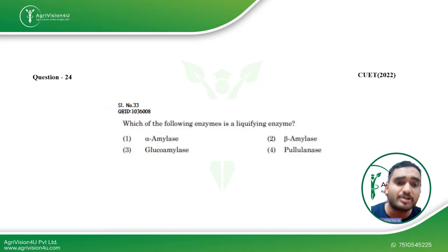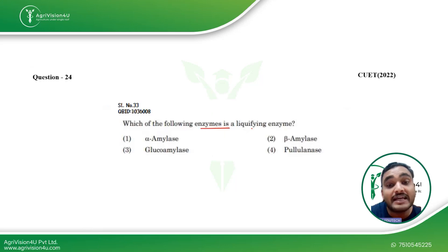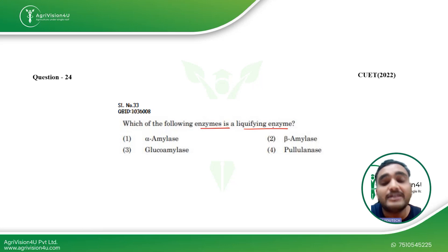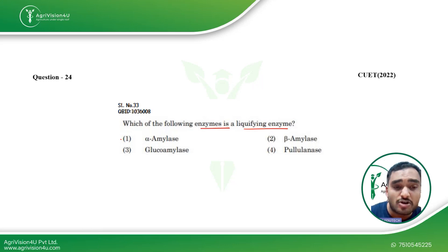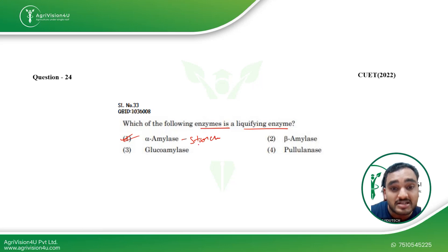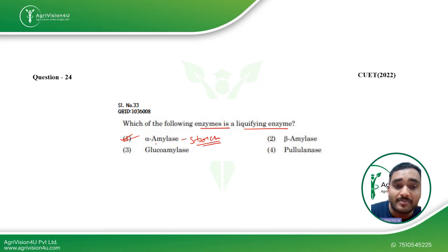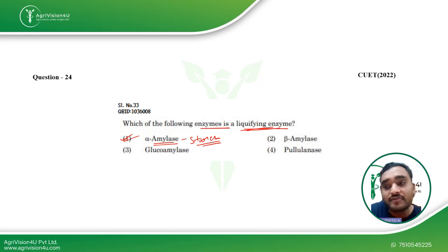Coming to the next question: which of the following enzymes is a liquefying enzyme? Liquefying enzymes are those which liquefy food. Alpha amylase, also known as the starch-degrading enzyme, is the answer. Alpha amylase is the starch-degrading enzyme and is also known as the liquefying enzyme.